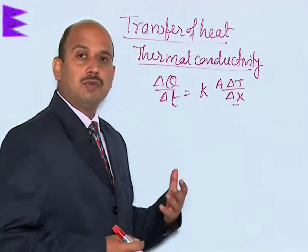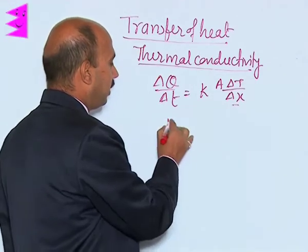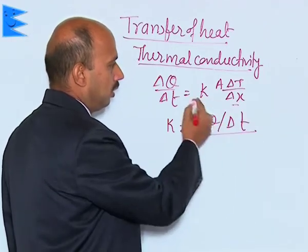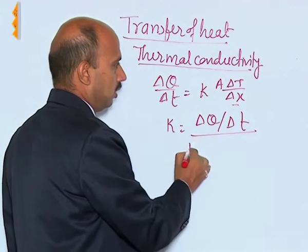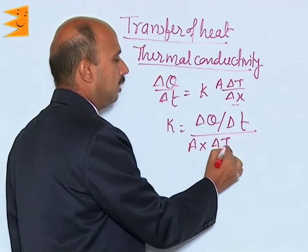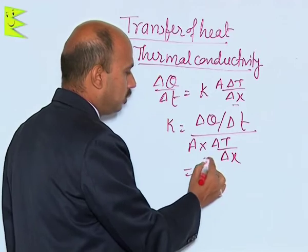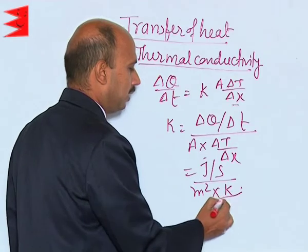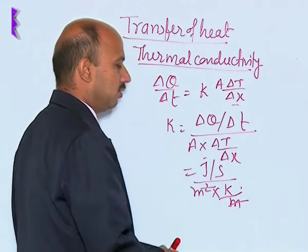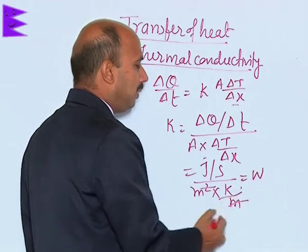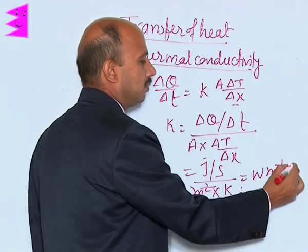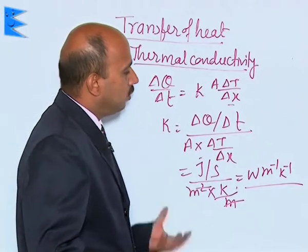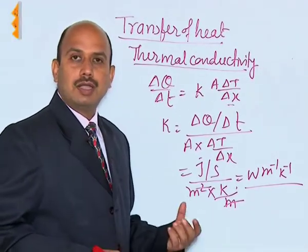What is the unit of the coefficient of thermal conductivity? We can write k equals delta Q divided by delta t, divided by A times delta T by delta x. This works out to joule per second divided by meter squared times kelvin per meter — the meters cancel — giving watts per meter per kelvin, or equivalently per degree Celsius. This is the unit of the coefficient of thermal conductivity.